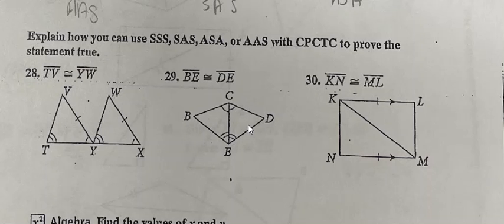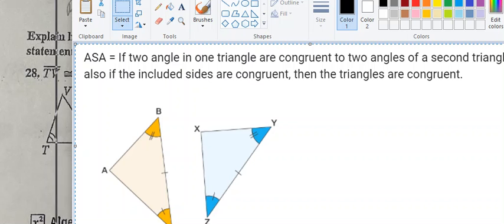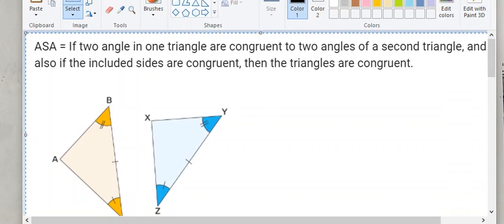So if we were to look for that in our angle theorems, we would look at this: ASA. If two angles in one triangle are congruent to two angles of a second triangle, and if the included sides are congruent, then the triangles are congruent.